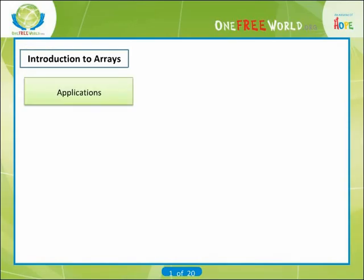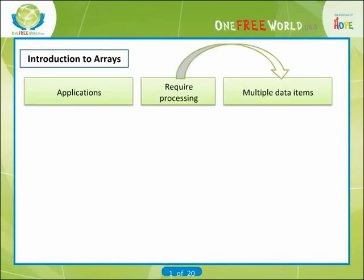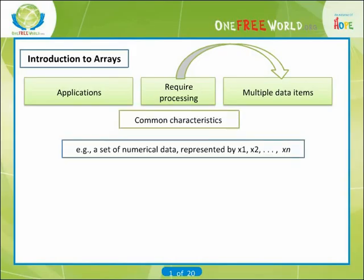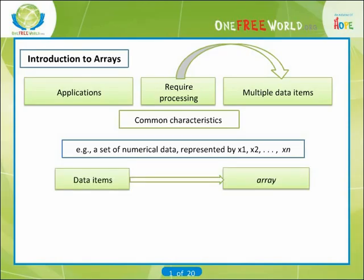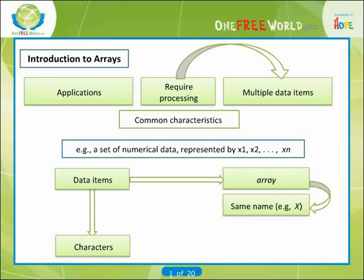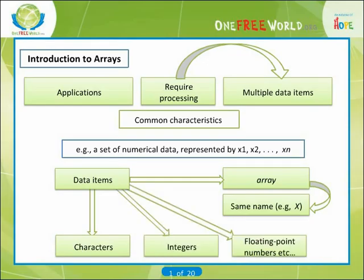Many applications require the processing of multiple data items that have common characteristics. For example, a set of numerical data represented by x1, x2, to an infinite number of x. In such situations, it is often convenient to place the data items into an array where they will all share the same name, for example x. The individual data items can be characters, integers, floating-point numbers, etc. However, they must all be of the same type and the same storage class.